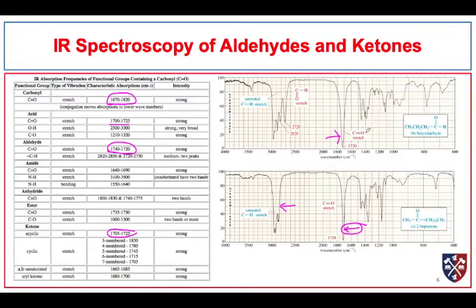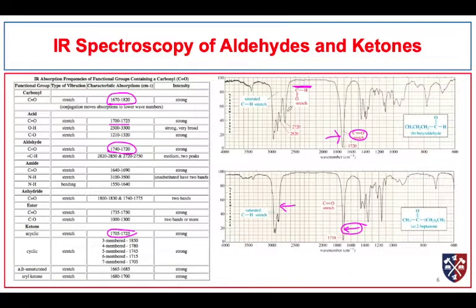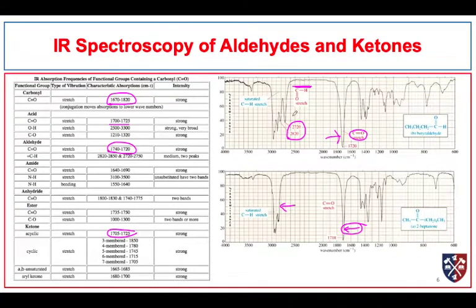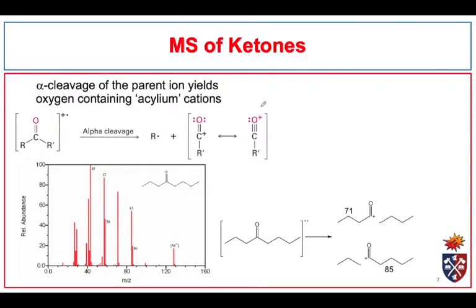If we were to have an aldehyde, we also see that large, sharp absorption — in this case at 1720 for pentanal. We also have absorptions due to the hydrogen bonded to the carbonyl carbon, giving two absorptions: one around 2720 and another around 2820. This is fairly indicative of aldehydes — we will see these two absorptions due to the C-H stretch of the hydrogen bonded to the carbonyl carbon.